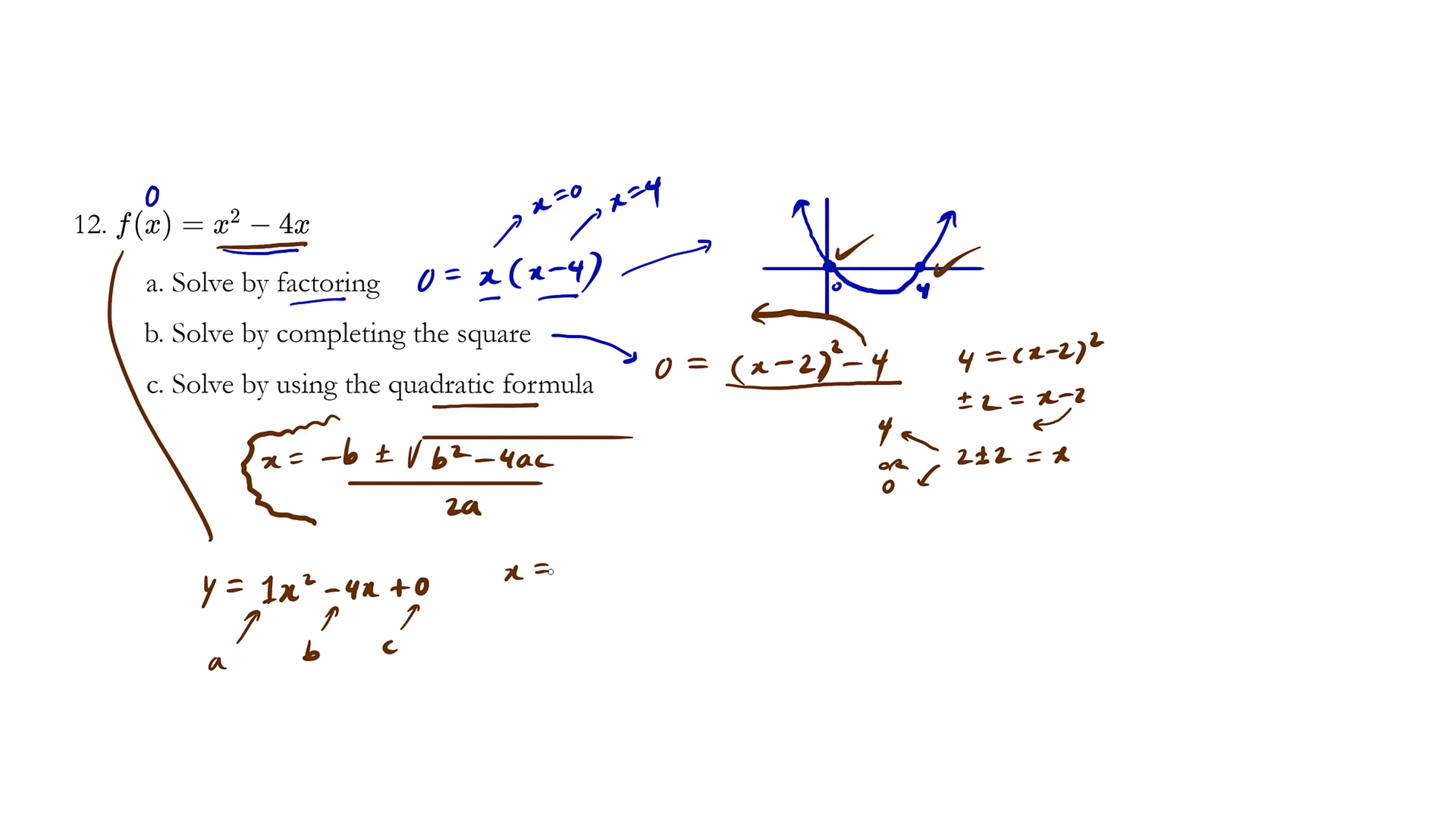So x equals minus b, so minus negative 4, plus minus square root b, which happens to be negative 4 squared, minus 4. Set up your brackets. a, c, all over 2 times a. So you can simplify as you go. Two negatives make a positive. And the denominator, 2 times 1 is just 2.